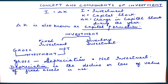This slide deals with the concept and components of investment. Investment equals delta K, where I stands for investment and K is capital stock. Delta K means the change in the stock of capital during a particular year, which is closing stock minus opening stock. Another name for delta K is capital formation.